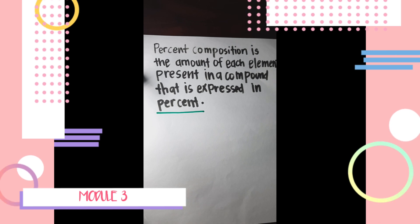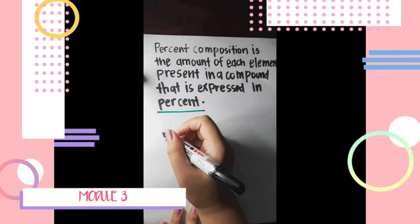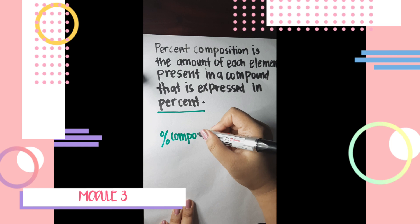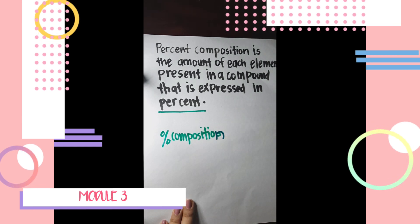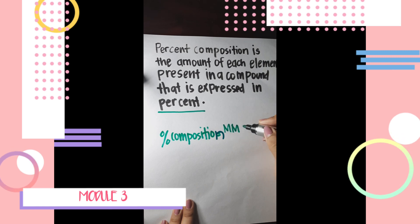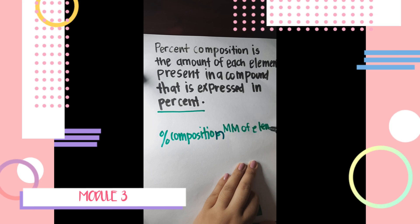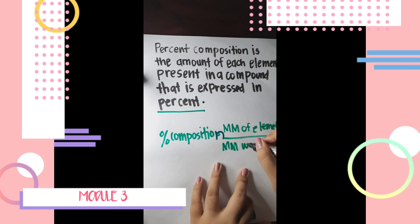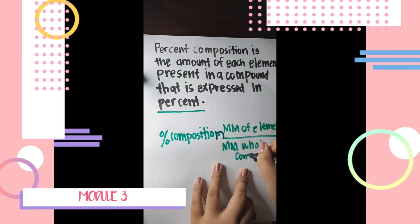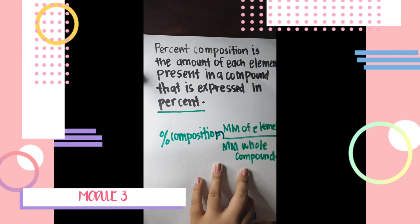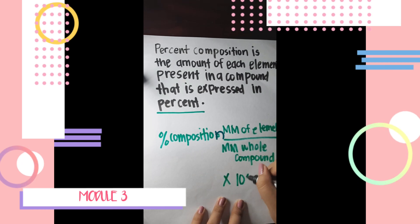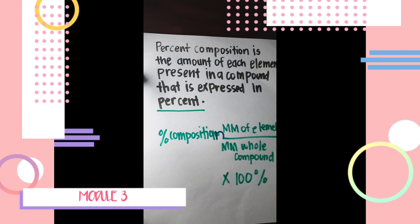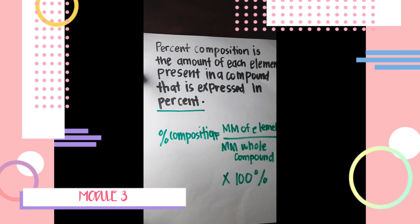So what is the formula in finding the percentage composition? Percentage composition is equal to the molar mass of the element over the molar mass of the whole compound, multiplied by 100 percent. That is the formula in finding the percentage composition.